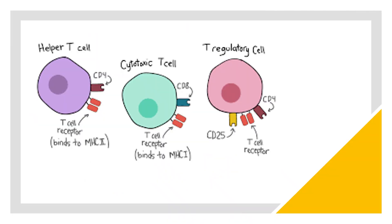Apart from that, this is also a very sorted diagram: T-helper cell has CD4 present and T-cell receptor present, which binds to MHC2 molecule. TC cell has CD8 present and binds to MHC1. T-regulatory or suppressor cell has CD4 and additionally CD25 present, along with T-cell receptor, which regulates the remaining T-cells.